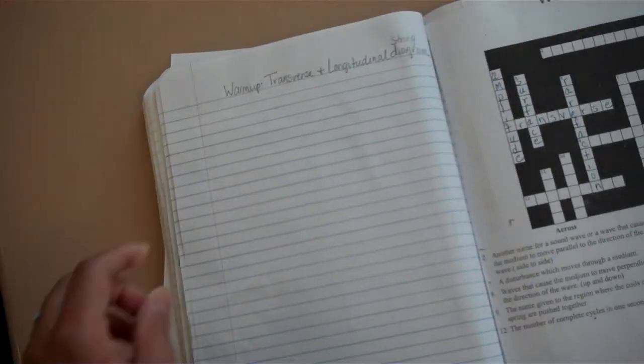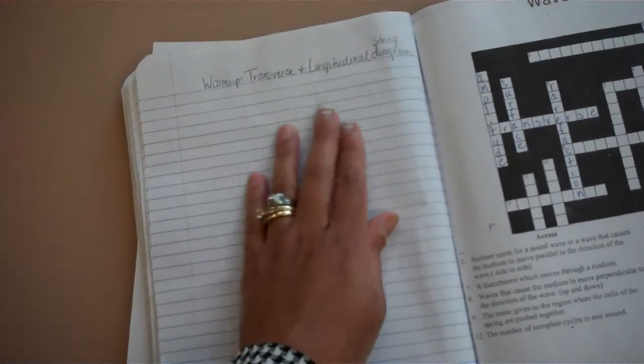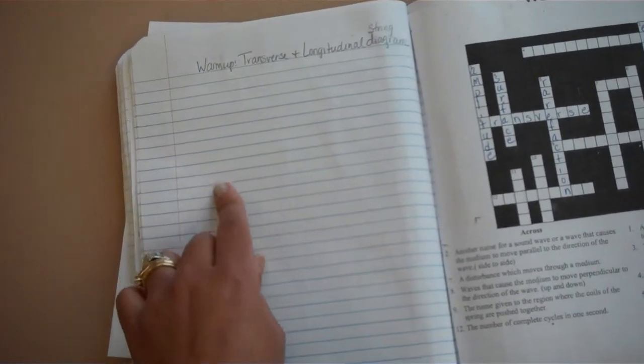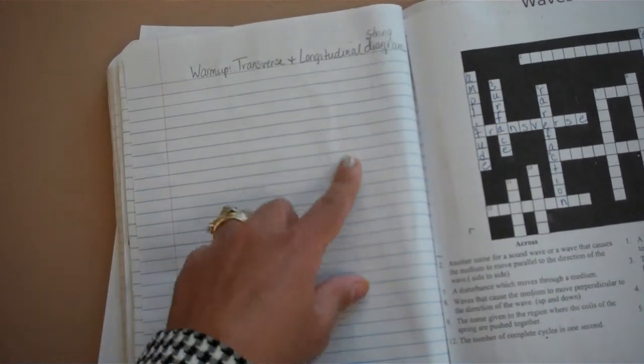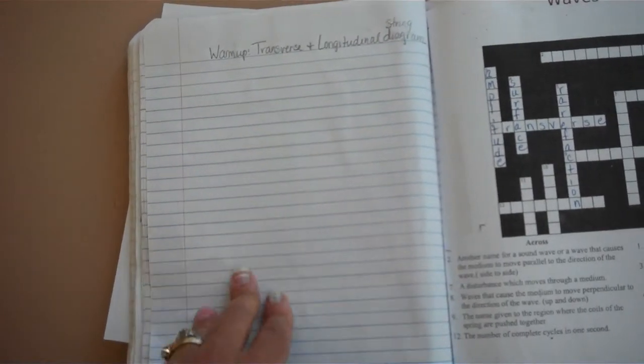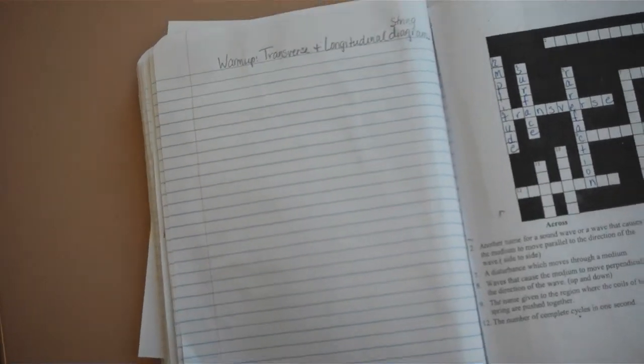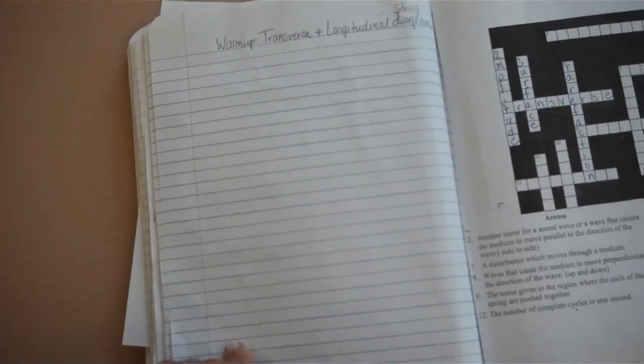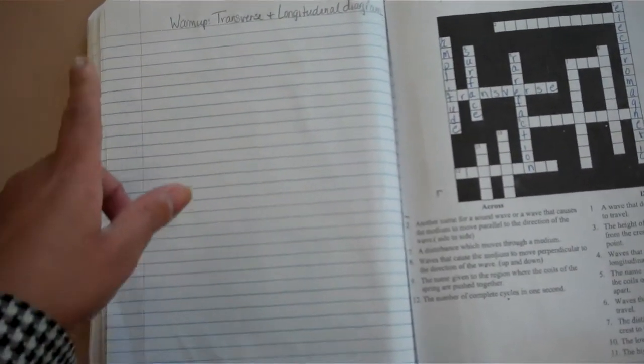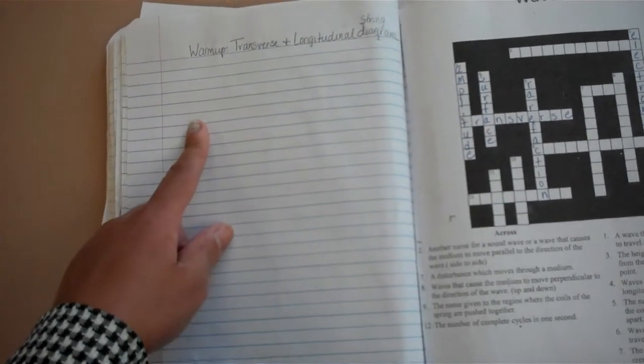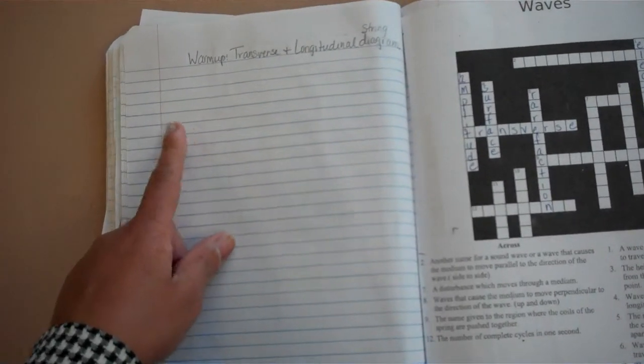97 should be your warm up on transverse and longitudinal wave, and you should have had the string where you made a longitudinal and a transverse wave out of the string in class, and you label the parts of a transverse wave and label the parts of a longitudinal wave, the compressions and rarefactions on a longitudinal wave, and the crest, trough, amplitude on the transverse wave.